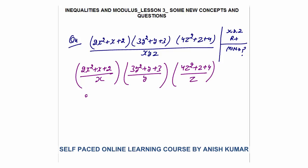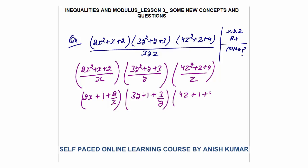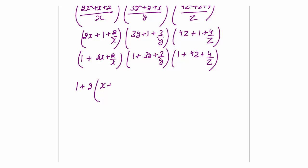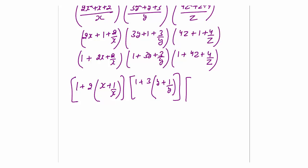Dividing each part: this gives (2x + 1 + 2/x) + (3y + 1 + 3/y) + (4z + 1 + 4/z). Rearranging: [1 + 2(x + 1/x)] × [1 + 3(y + 1/y)] × [1 + 4(z + 1/z)].